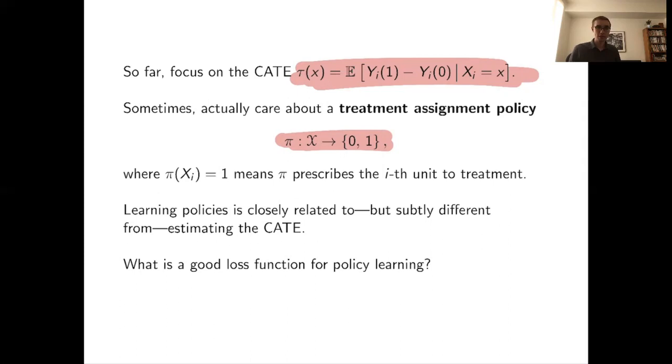The problem of policy learning and the problem of CATE estimation are obviously very closely related, but there are some subtle but crucial differences. One important difference is the end goal. The end goal of CATE estimation is to accurately estimate τ(x). The goal of policy learning is to learn a policy that achieves high welfare, when you deploy it, it makes the right recommendations for people, so you get high rewards on average. If you get a reasonably accurate estimate of τ(x) but this doesn't help you make good decisions, then in terms of policy learning goals, that's not of much use.